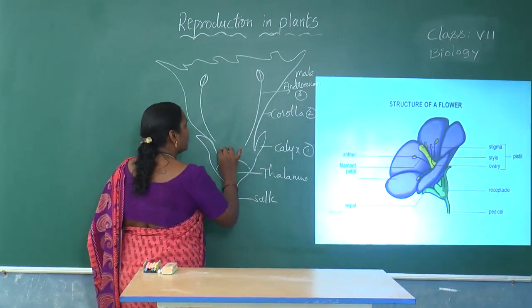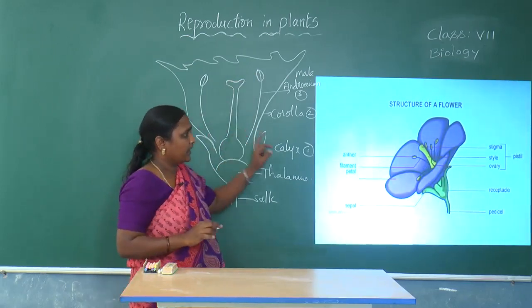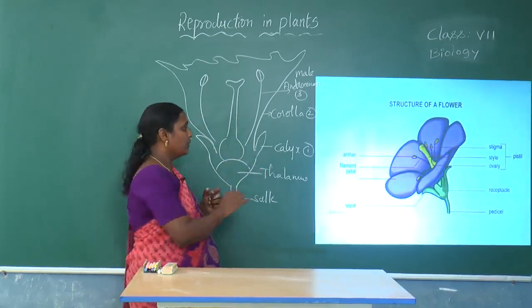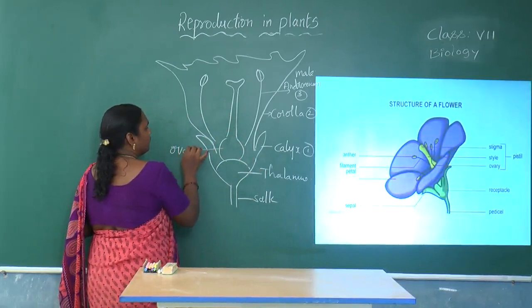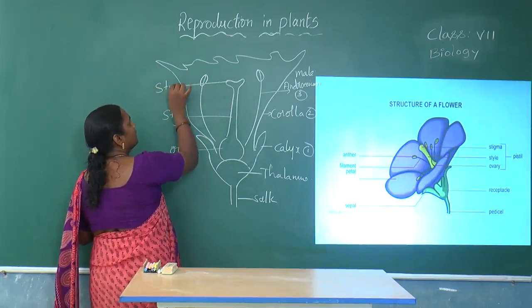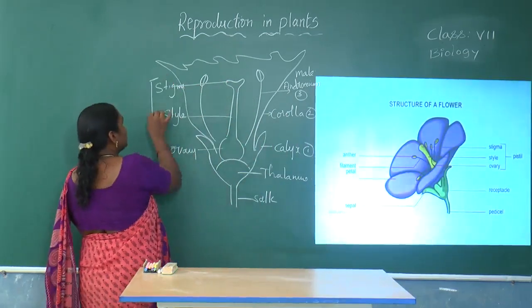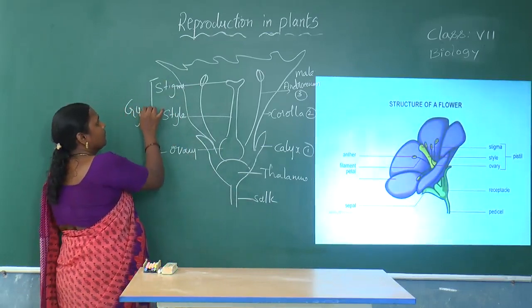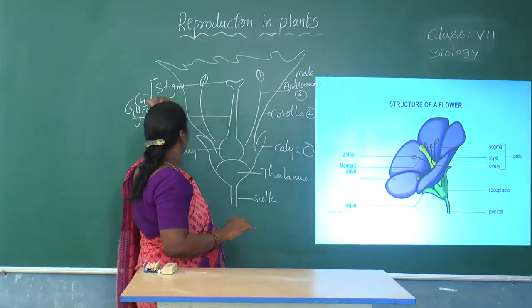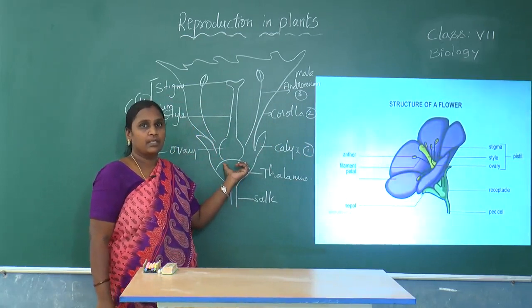The fourth whorl is the gynoecium — the female part of the plant, present in the middle part of the flower. At the center is the ovary, then the style, and the upper sticky part is called the stigma. The ovary, style, and stigma together are called the gynoecium. So all four whorls — calyx, corolla, androecium, and gynoecium — are sitting on the thalamus, which is the swollen part.